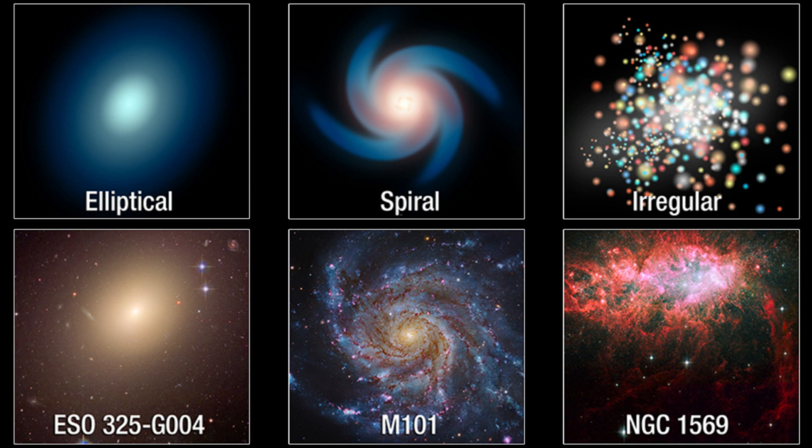Irregular galaxies, as their name suggests, defy classification with their unique and unpredictable forms, often shaped by gravitational interactions with neighboring galaxies.